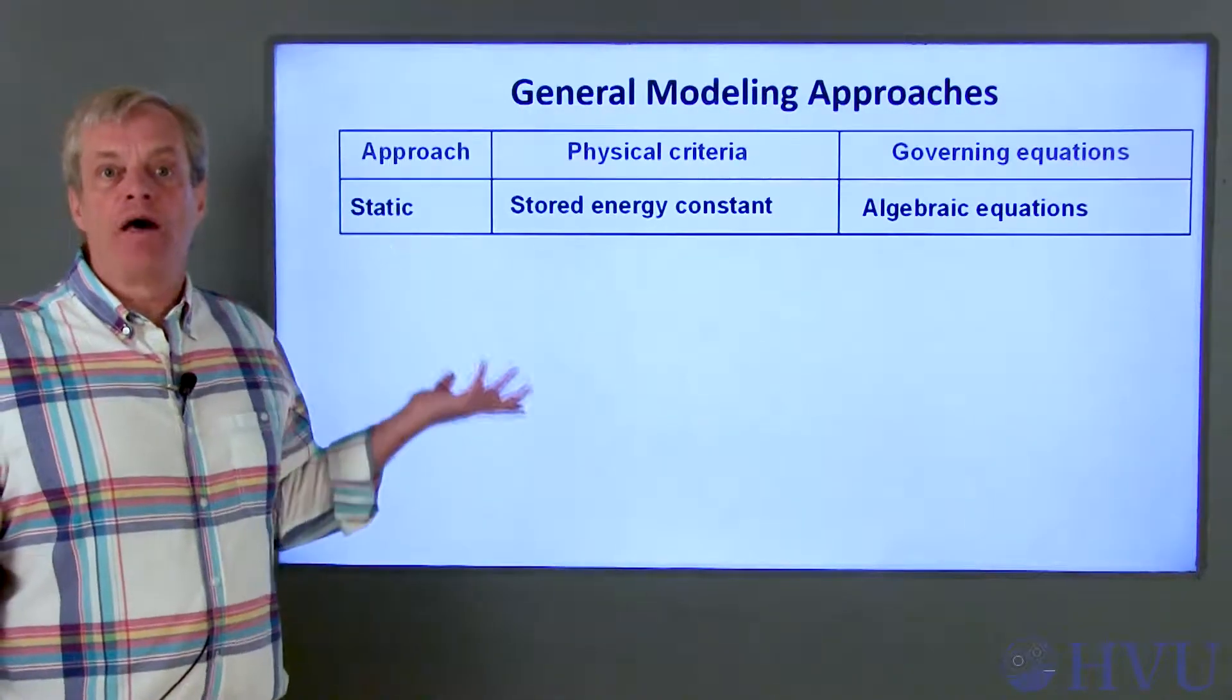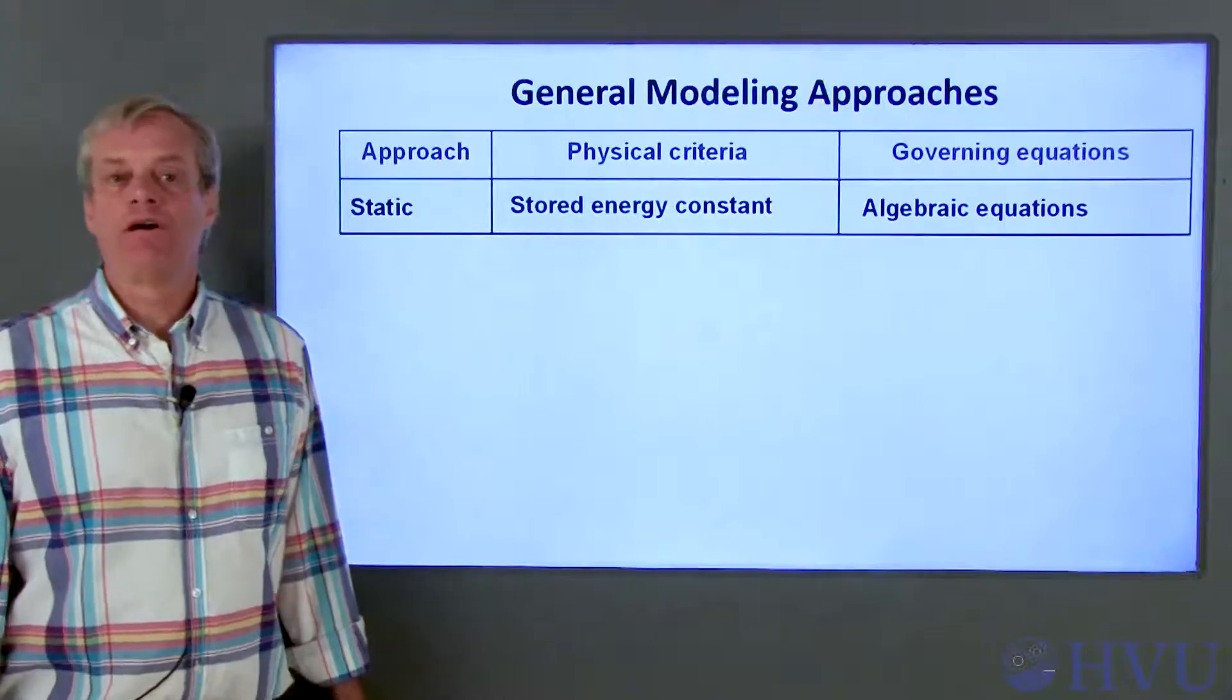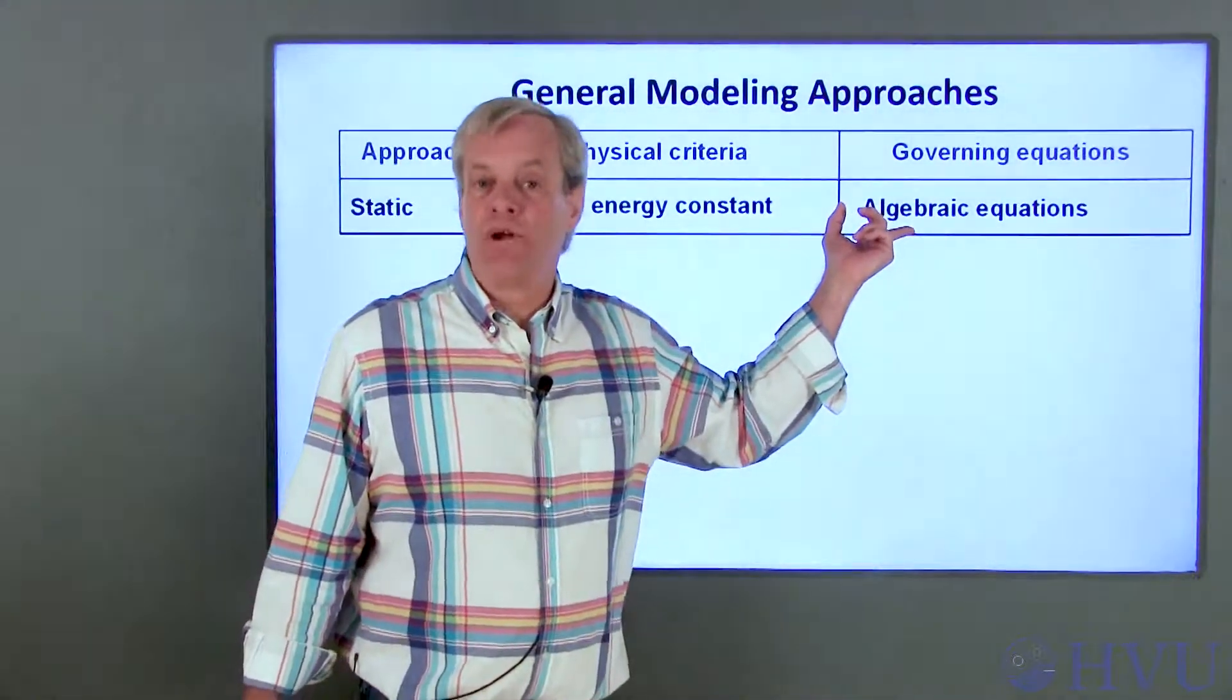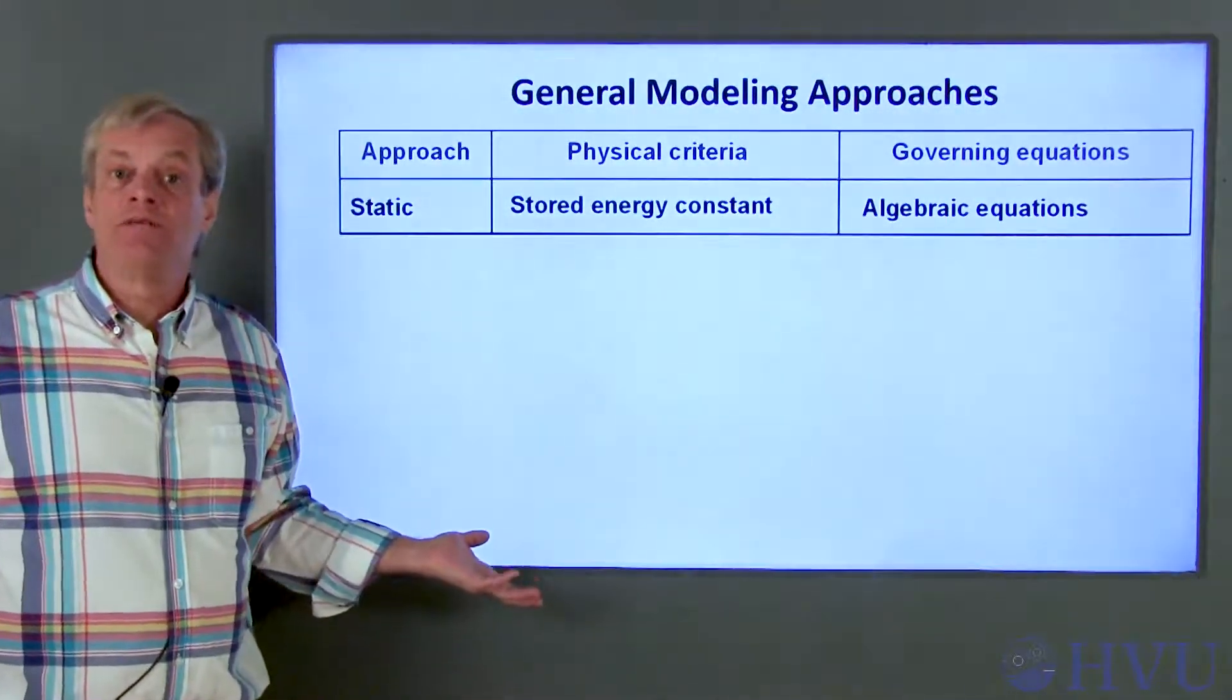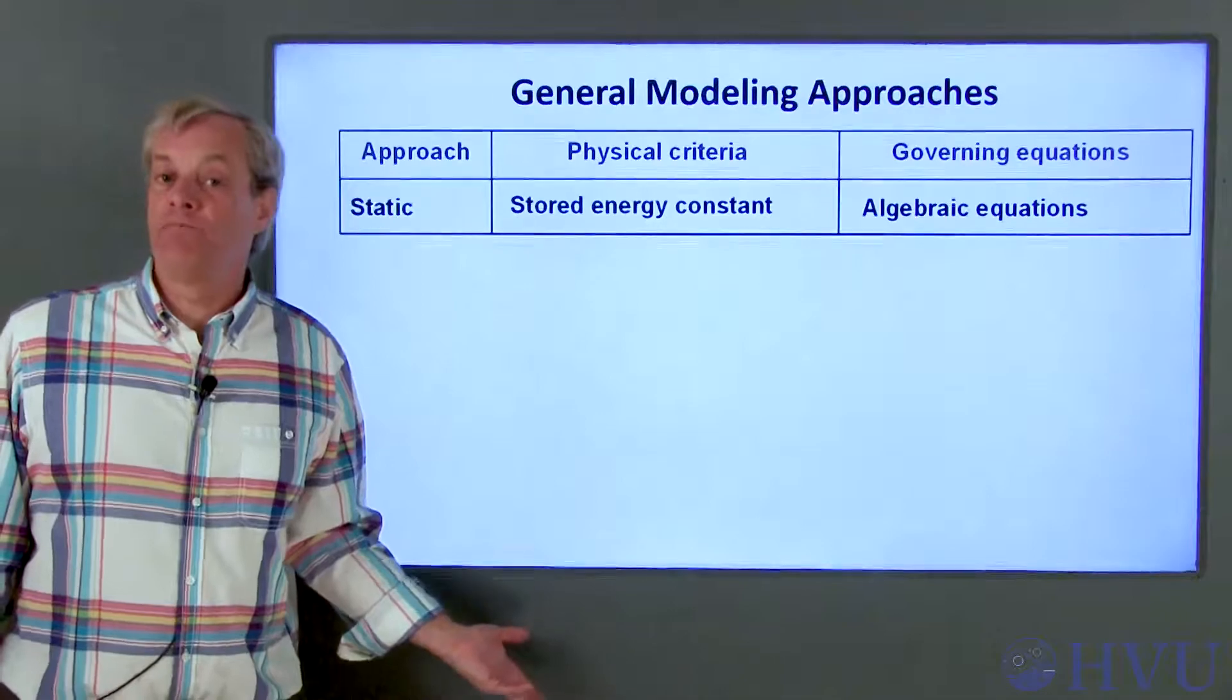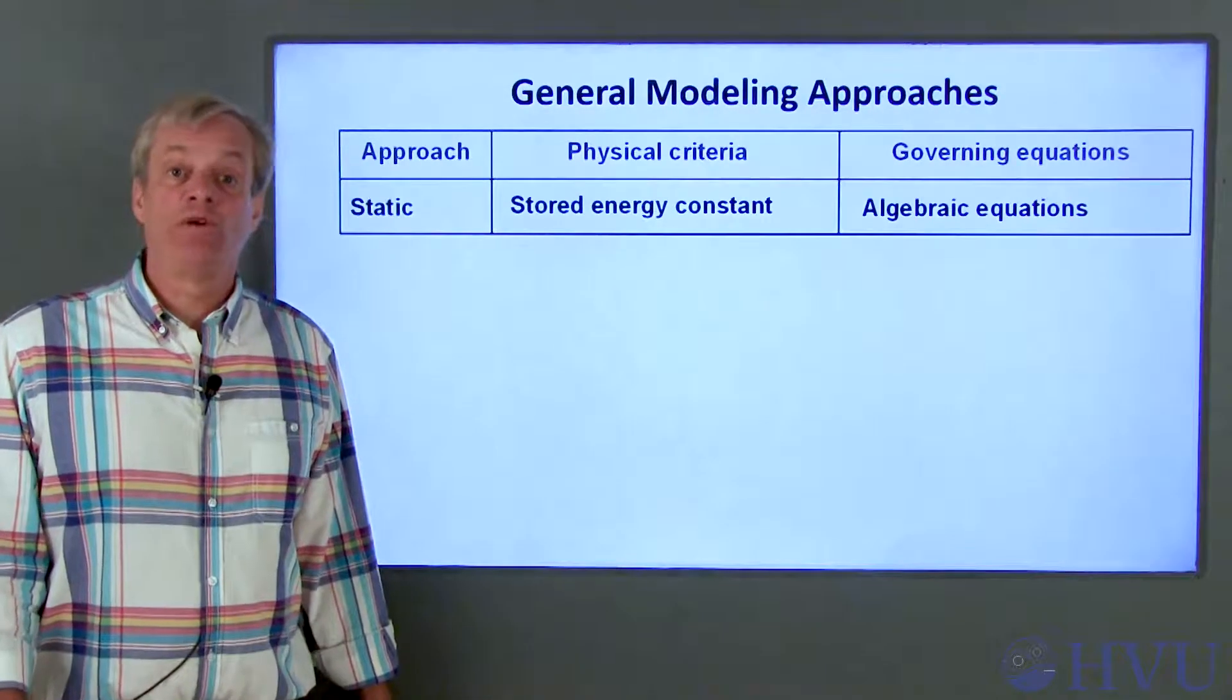First and simplest are models of systems that either don't store energy, or where the energy stored is constant. A situation like this could be where a car is moving at a constant velocity. Since the velocity is constant, the energy is constant. These systems are governed by algebraic equations. Another, more interesting class of systems is where the energy is being transferred between energy storage elements. These are called dynamic systems. For example, if you apply the brakes in your car, the kinetic energy is dissipated as heat in the brake pads. Energy is being exchanged within the system.